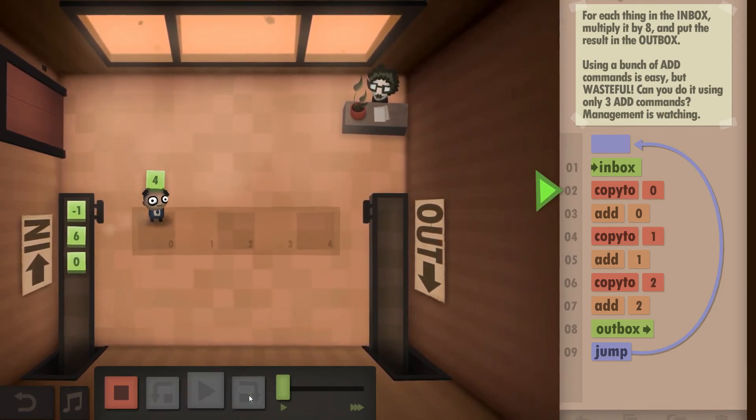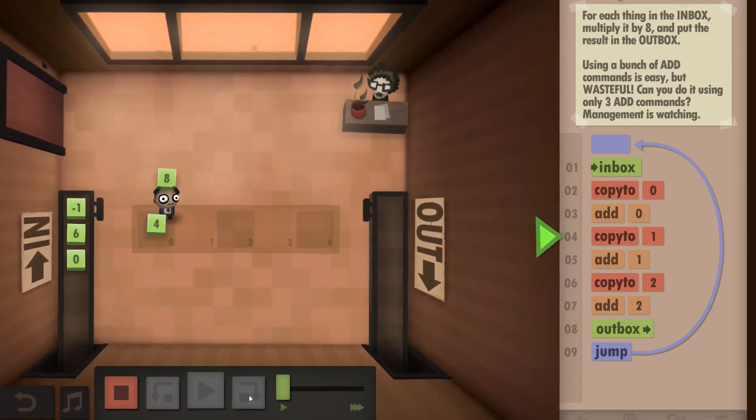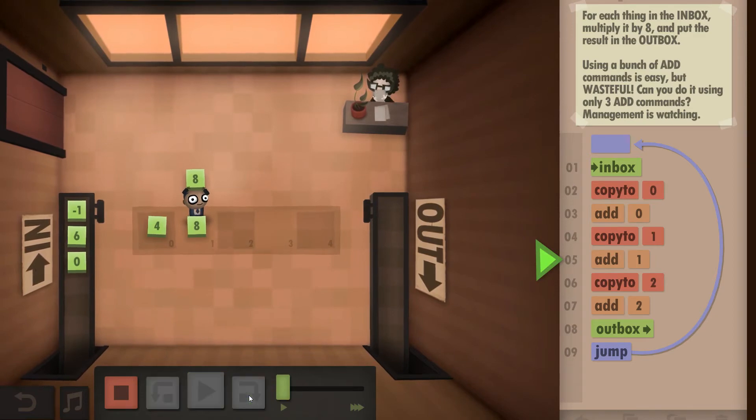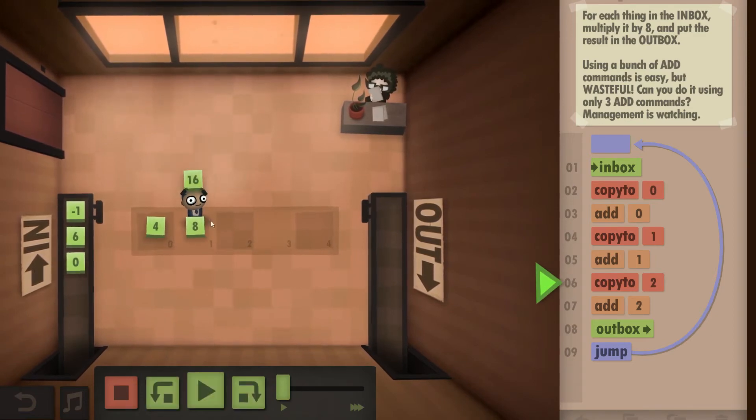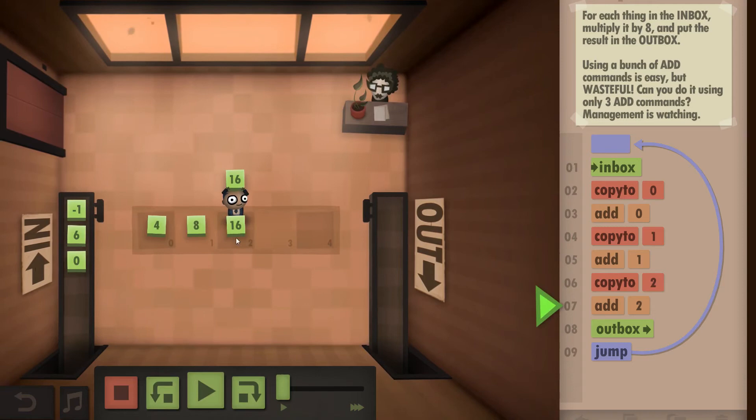So you get the 4, you copy it to field 0. Then you add the 4, doubling it, putting that to field 1. Then you add the 8 again, doubling the 8, but quadrupling the 4. Put that into the next field, so you have times 4 in here.